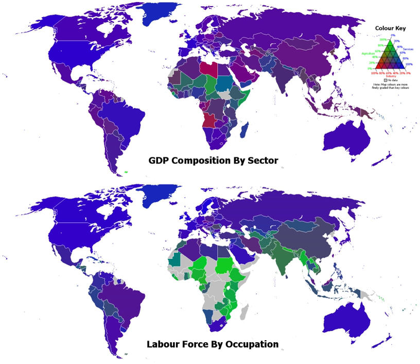A recent trend has been the migration of prosperous, industrialized nations towards a post-industrial society. This is manifested by an increase in the service sector at the expense of manufacturing, and the development of an information-based economy — the so-called informational revolution. In a post-industrial society, manufacturers relocate to more profitable locations through a process of offshoring.